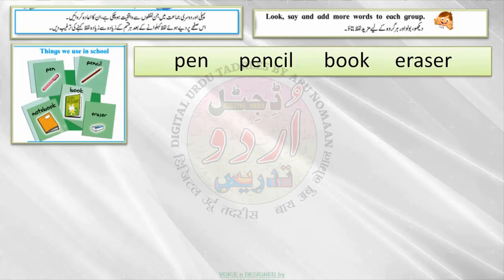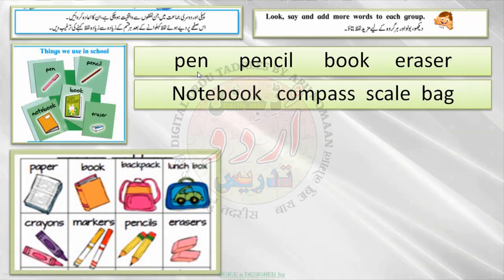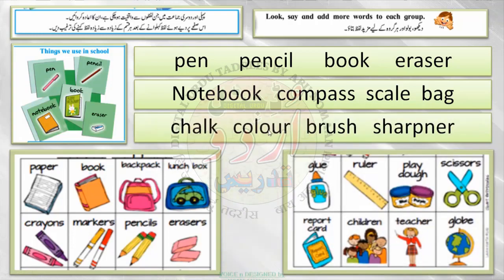Then there is one more group — things we use in school. What are those? Pen, pencil, book, notebook, eraser, compass, scale, bag, chalk, color, brush, sharpener. You can add these words in this group.